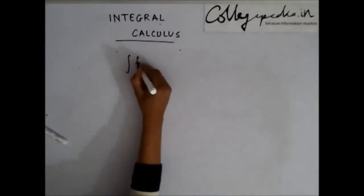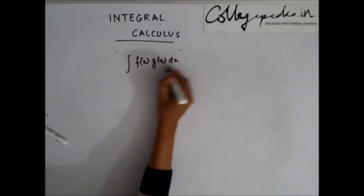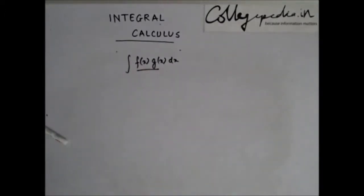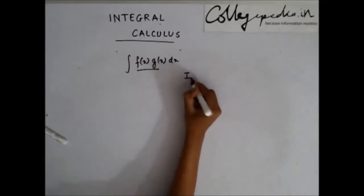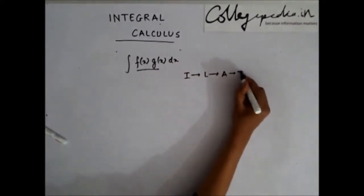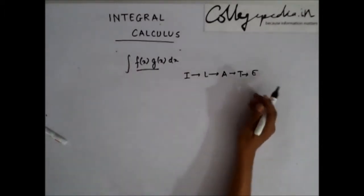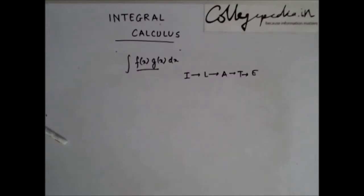The conclusion is: if we are asked to integrate an integral involving a product of two functions, then to select the first function, we follow the method of ILATE, where I stands for inverse trigonometric functions, L stands for logarithmic functions, A stands for algebraic functions, T stands for trigonometric functions, and E stands for exponential functions.